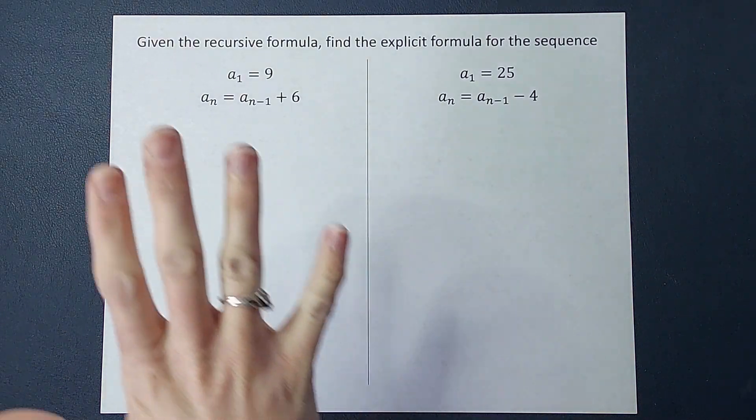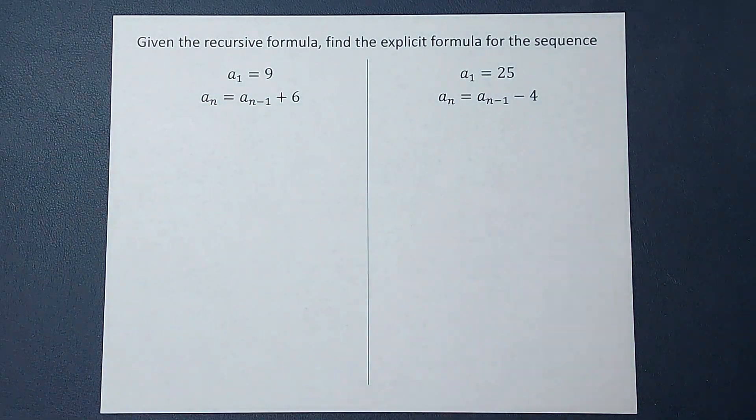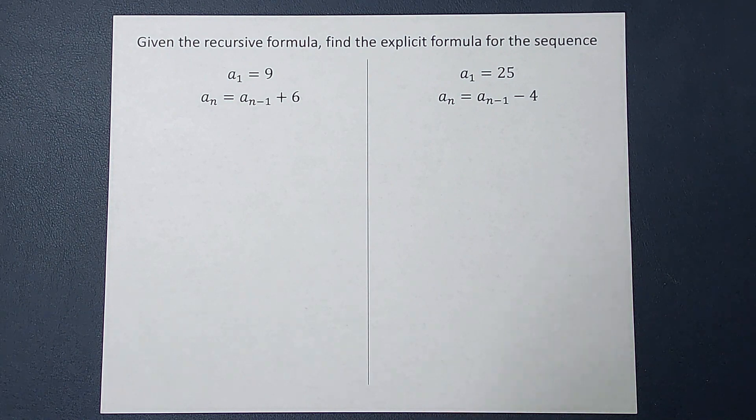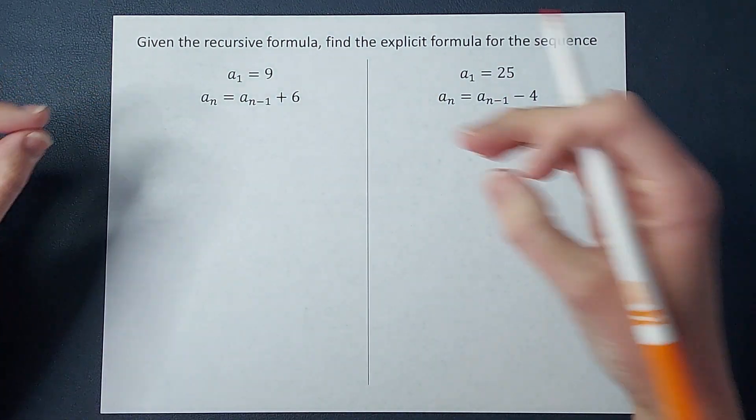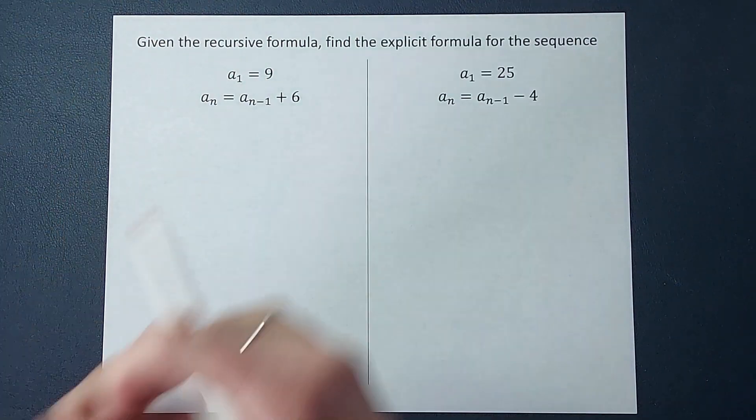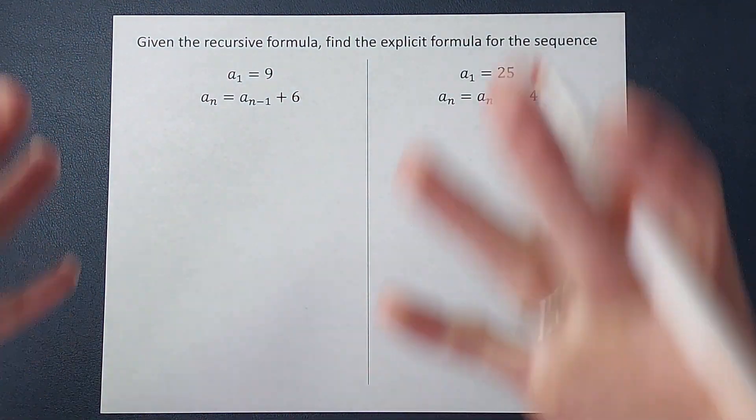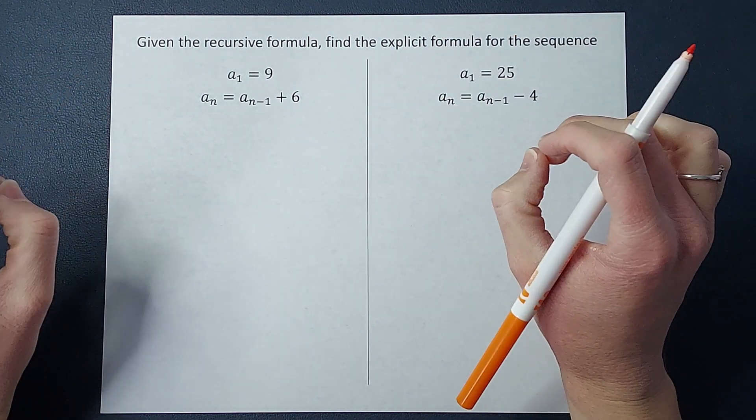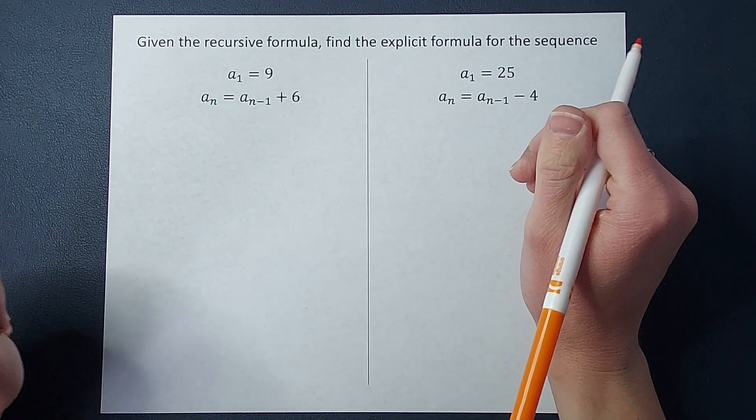But we have been given a recursive formula and we want to find the explicit formula. So remember these formulas have to do with sequences. They help you find more numbers in the sequence. For recursive formulas you have to know the number before a number in a sequence to know the next one. With an explicit formula they're awesome because you can just be like I want to know the hundredth term, plug it in and figure out what it is.